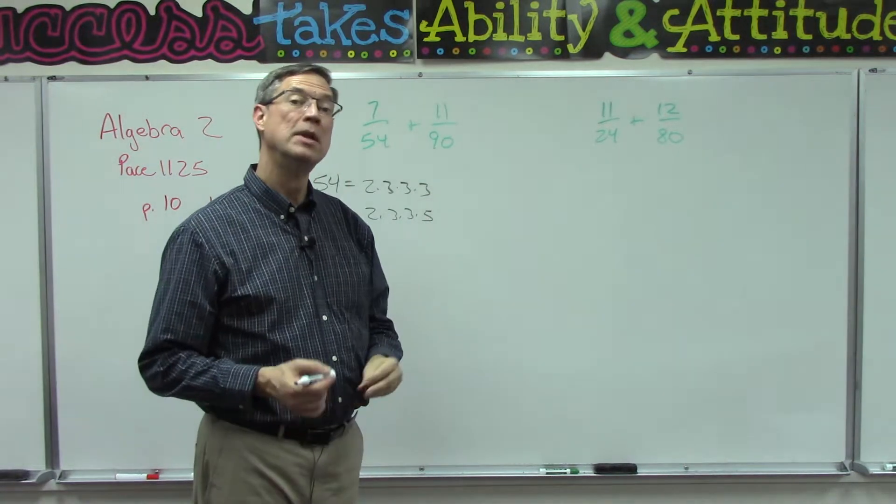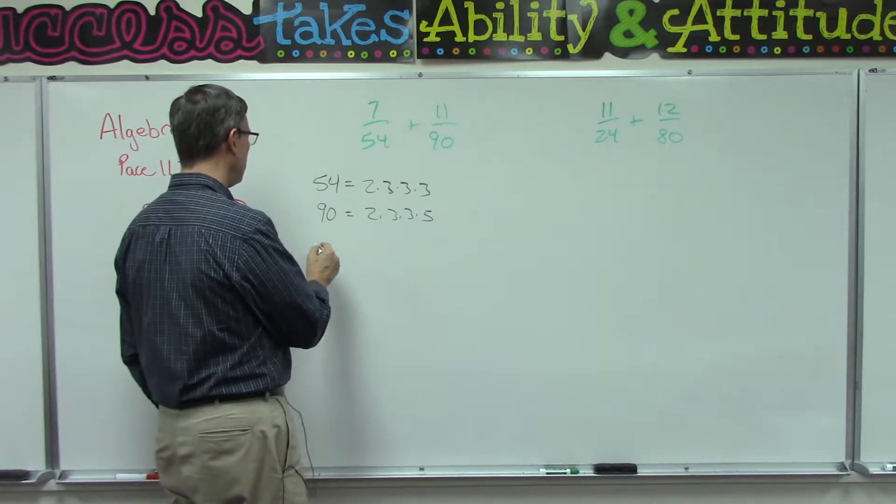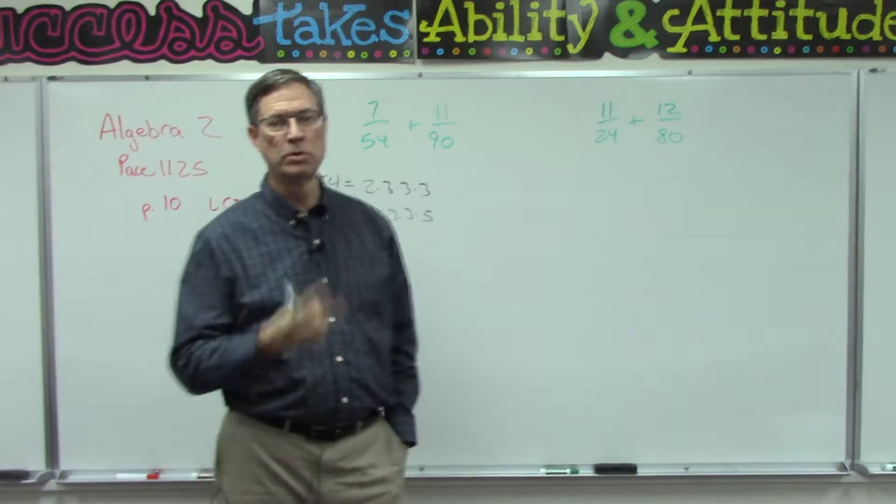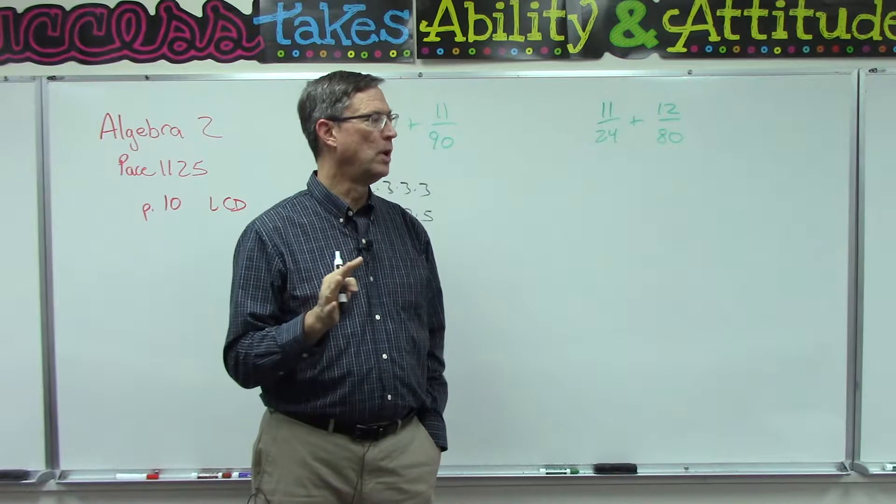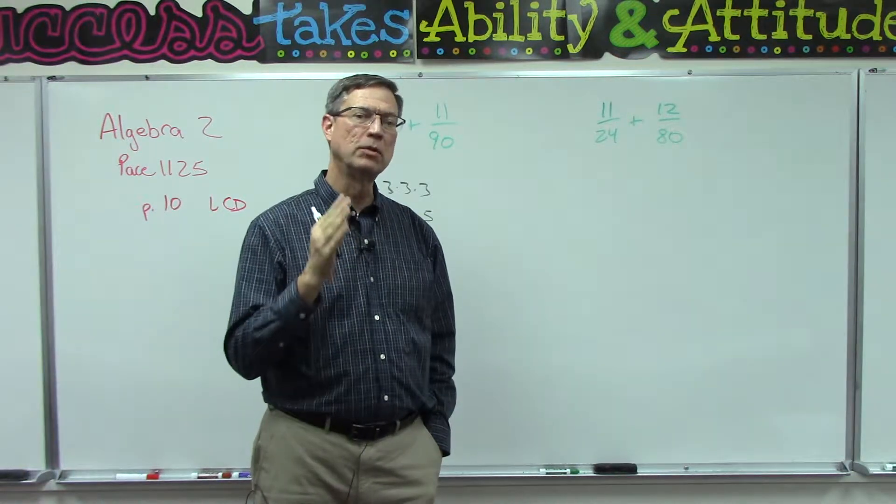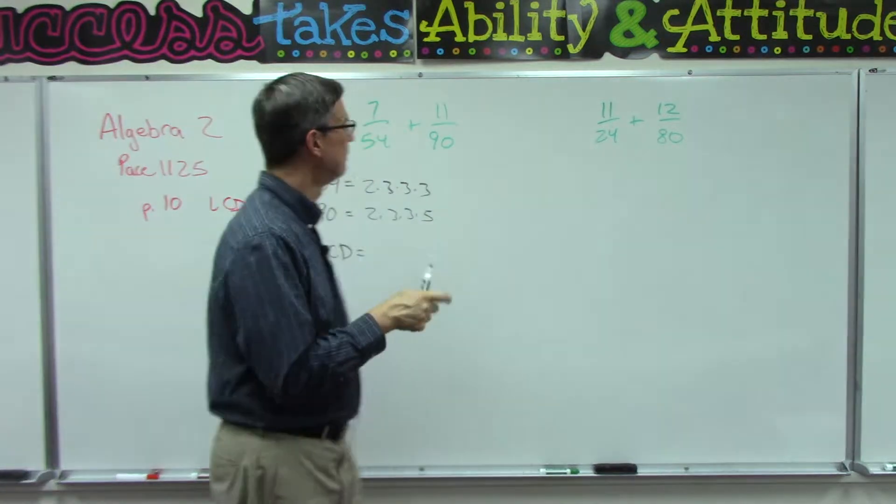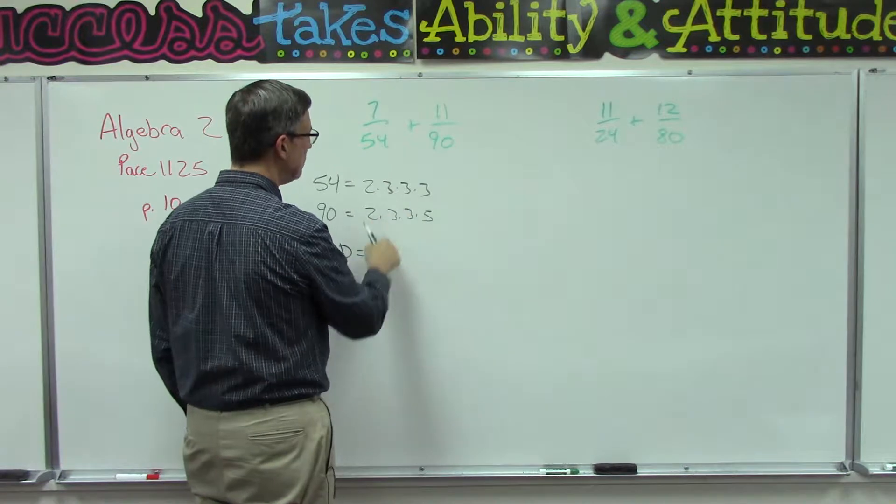Or we can think of it as 6 times 15, but all these prime factors multiplied together give us these two numbers. Now how do we find the least common denominator? I always tell my students there's two steps. If you keep these two steps straight, it's easy.